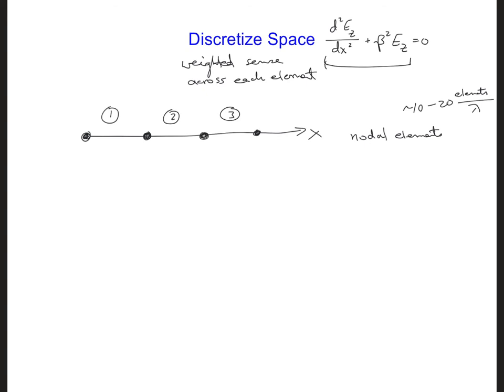Nodal elements are helpful when we can treat the unknown values we are solving as scalar values. In our case for the one-dimensional plane wave propagation, we already know that the electric field we are solving for is oriented in the z direction, so we can get away with using nodal elements. We're going to solve for the steady-state Ez value at each node — specifically the magnitude and the phase of the electric field.